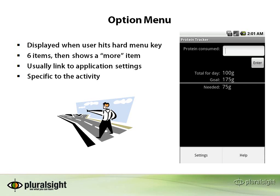Let's take a look at the option menu. The option menu is basically a menu that is going to show up when a user hits the hard menu key on their device. If you look at this screenshot I have of one that I had created for our protein tracker — what we're going to build here — I've got a settings and a help. This is just a common, basic set of operations, like in a Windows application where you might have your file and edit. Your basic stuff that applies to an action or activity goes in this menu.